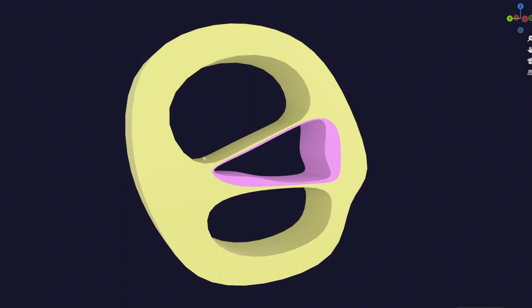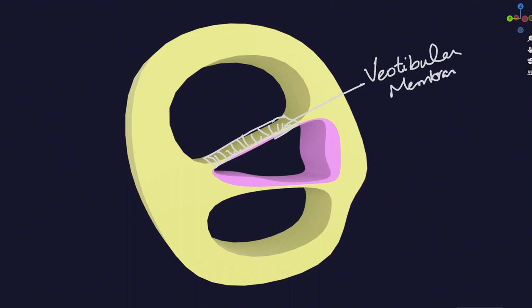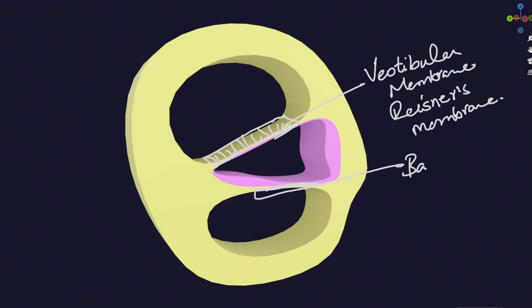The top wall of the cochlear duct will form a thin membrane between the scala vestibuli and the scala media. This membrane is called the vestibular membrane, also known as Reissner's membrane. Then another membrane will form below — this is called the basilar membrane.